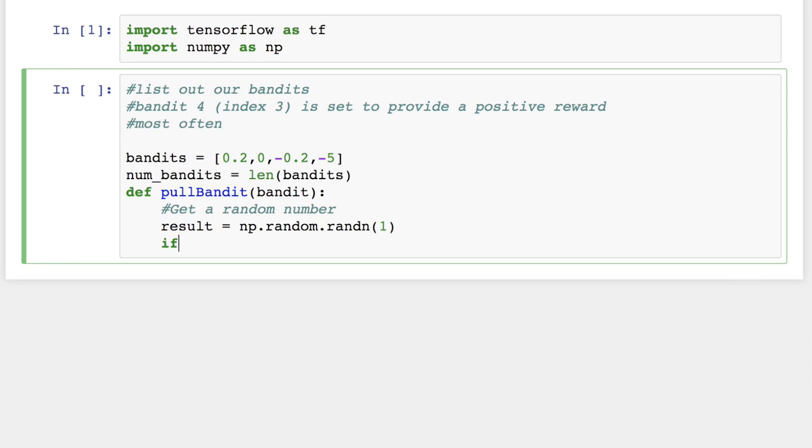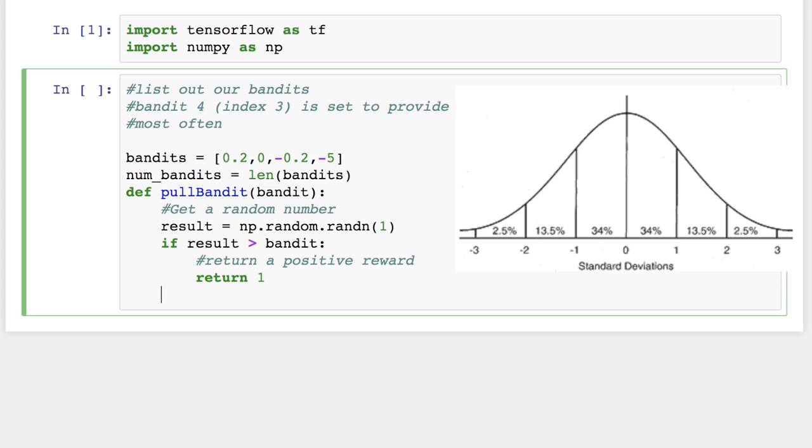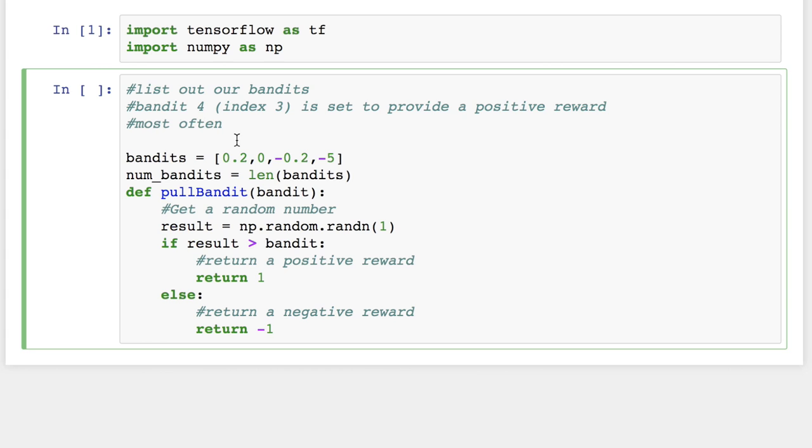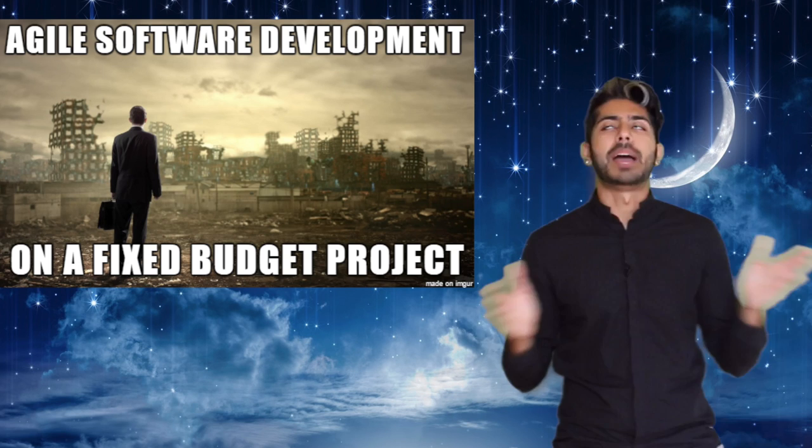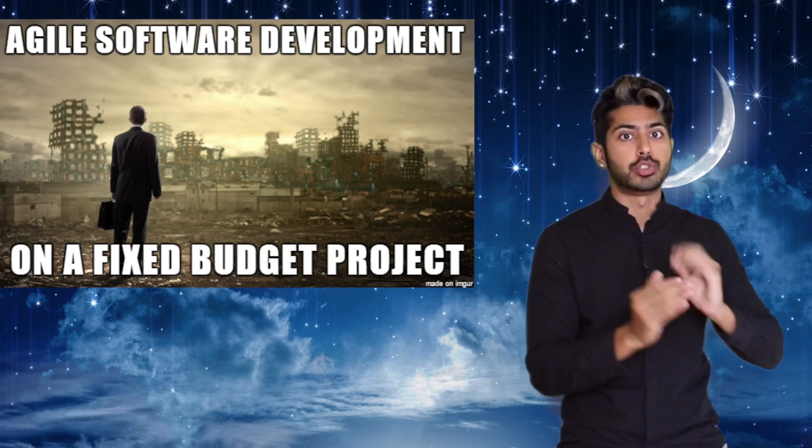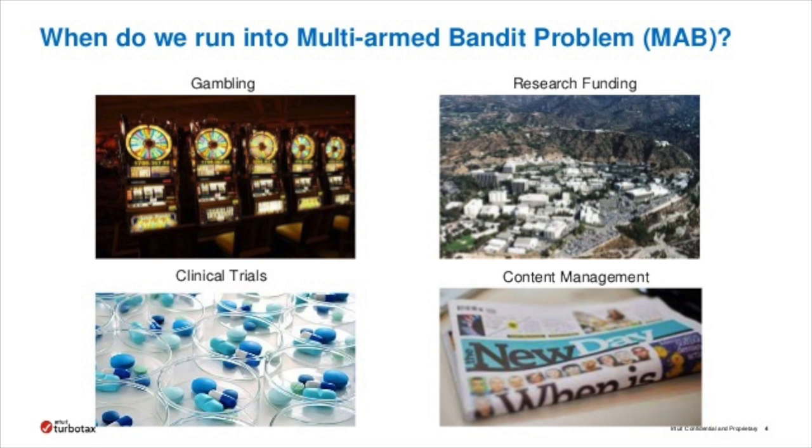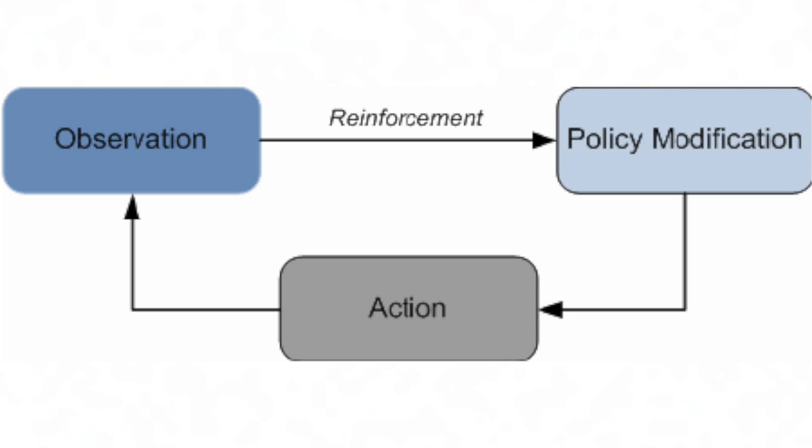We'll next define a pull bandit function, which given a bandit value, will first generate a random number from a normal distribution with a mean of zero. Then compare the parameter value to the generated number. Depending on the result, it'll either return a positive or negative reward. In practice, this model is used anytime you have a project with a fixed budget. It can be used to help best allocate resources to maximize success, since it's specifically designed to deal with the uncertainty about the difficulty and payoff of each possibility.